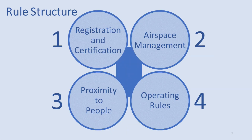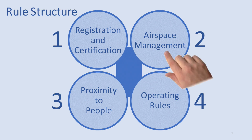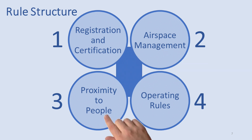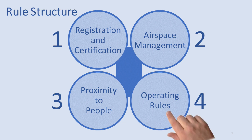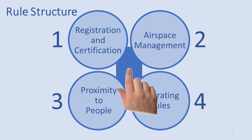I've grouped Don's drone rules into four categories: registration and pilot certification, airspace management, proximity to people — bystanders really — and lastly a set of pragmatic regulations focused on safety. And the blue thing in the middle? Well, let's just call that artistic license.